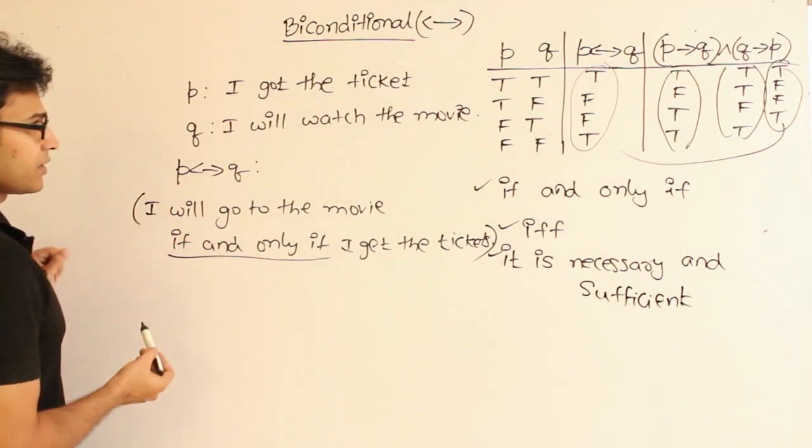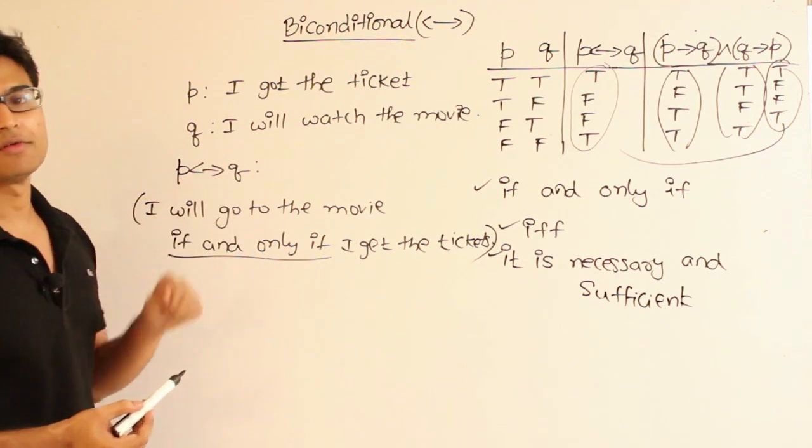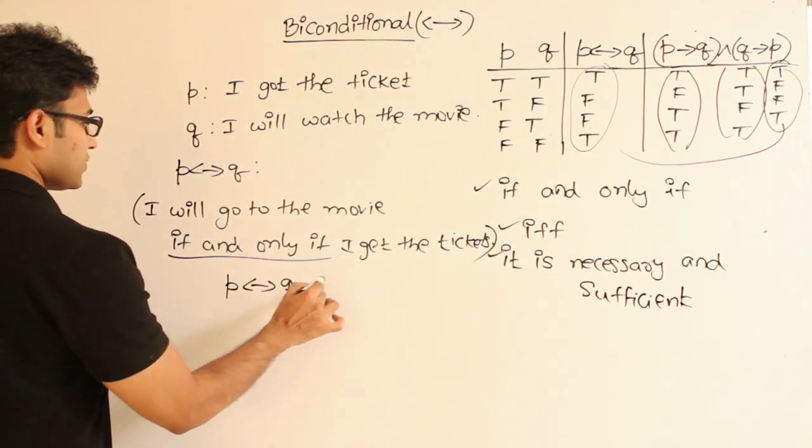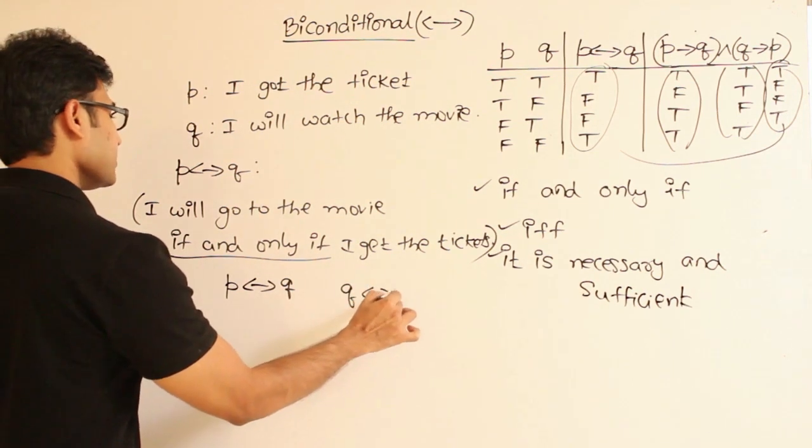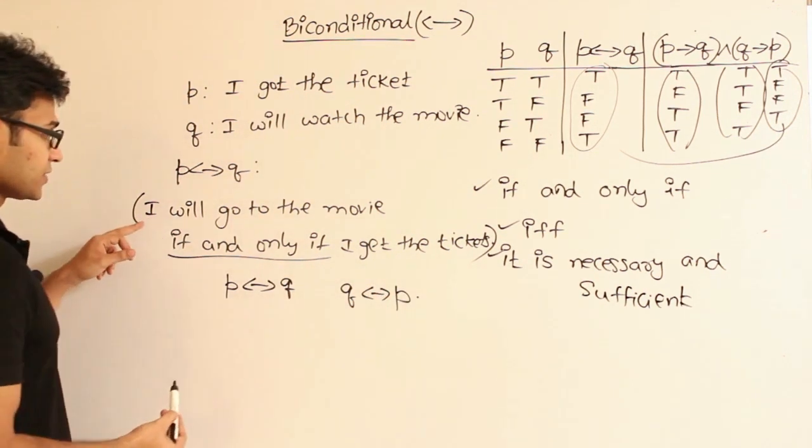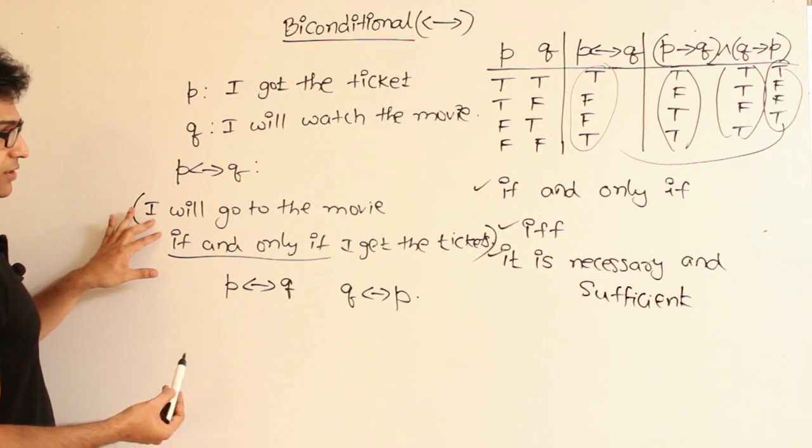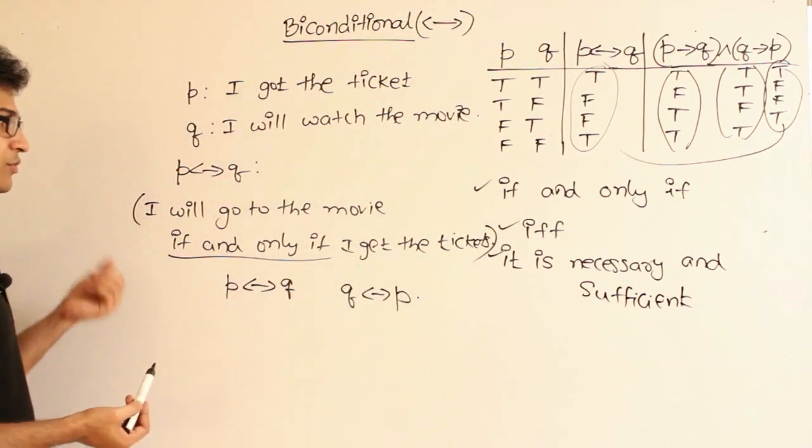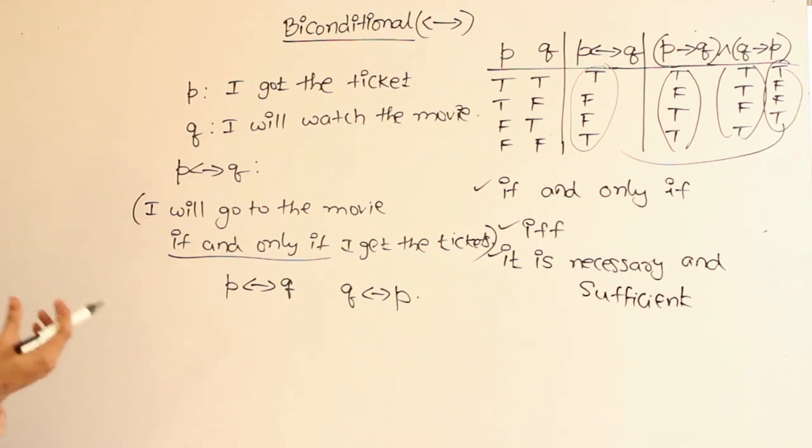Got it? So in biconditional we are going to use like this. And one other way of writing it is P double implies Q and Q double implies P - both are equivalent. So which means even this statement, same statement, can be written as 'I will get the tickets if and only if I go to the movie'. Even though it doesn't make sense in English, it is perfectly fine in this logic.